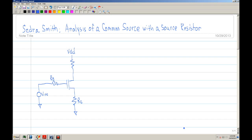Welcome to the Sedra Smith Analysis of a Common Source with a Source Resistor. So basically this is a follow-up to the first video. On the first video of the common source, I had basically this connected to ground. So now we're going to have a resistor and that changes again.